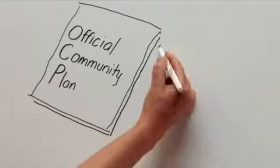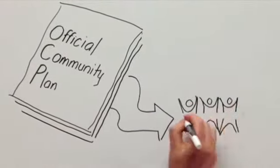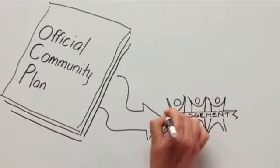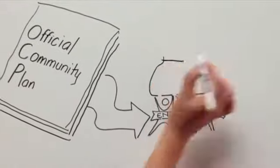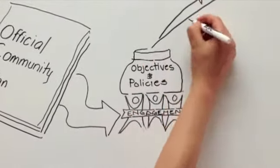An official community plan is a local government land use regulation, also called a bylaw, that is developed through consultation and engagement with the community. It contains objectives and policies to guide decisions on planning and land use management within the area covered by the plan.